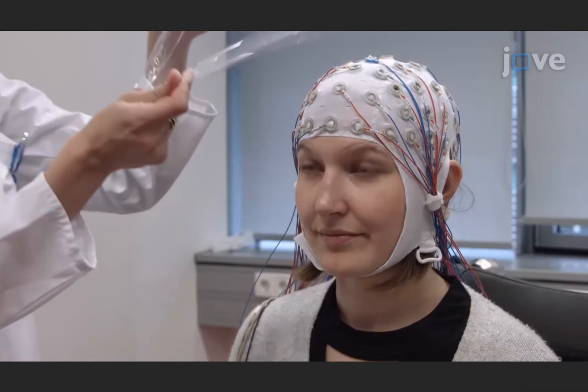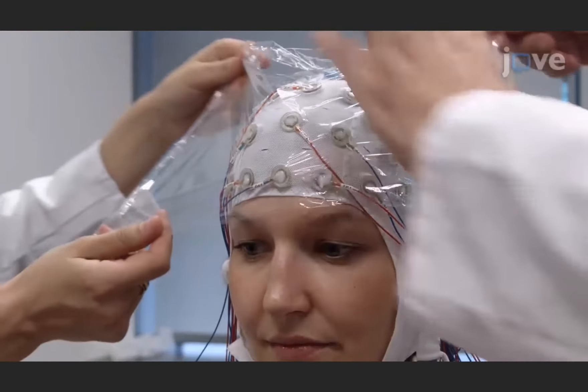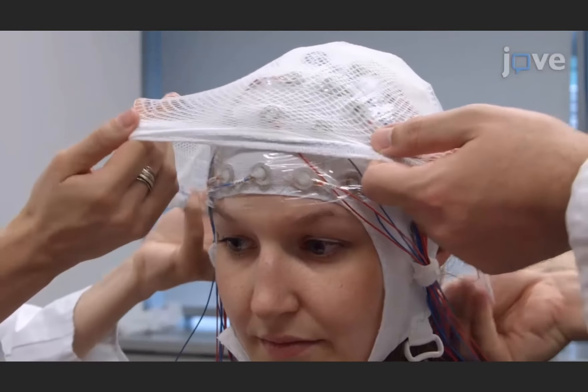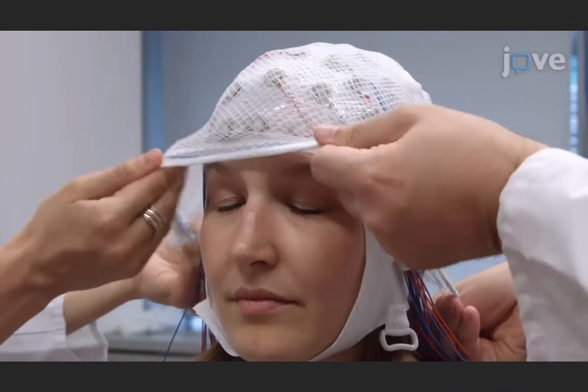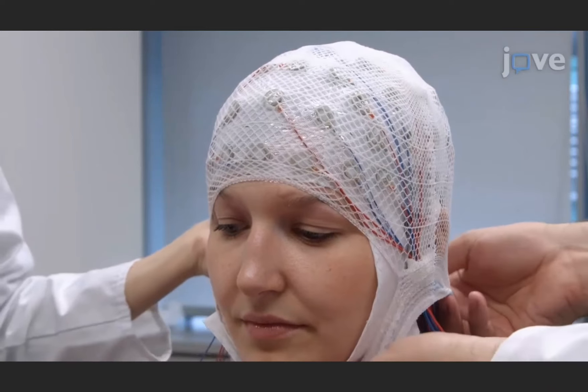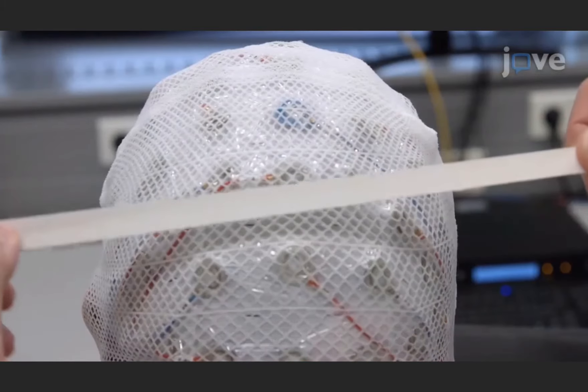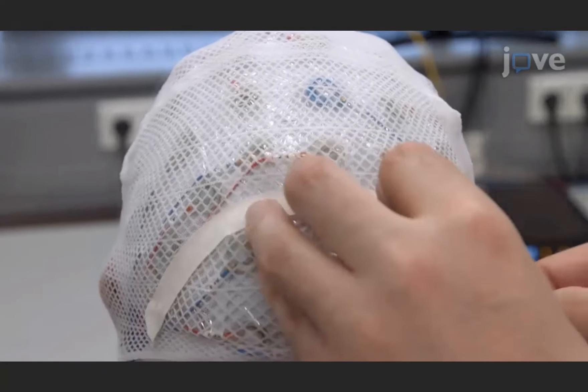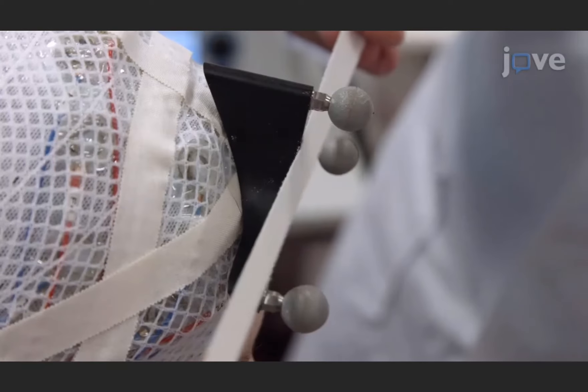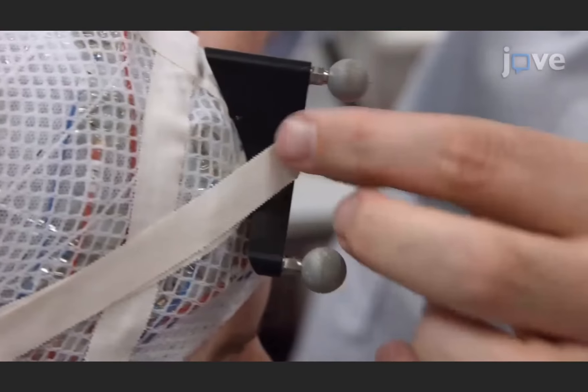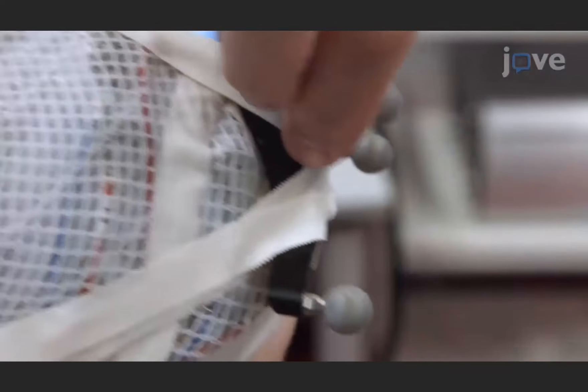Cover the EEG cap with plastic wrap and fit a mesh cap above the plastic wrap to keep the cables in a fixed position to reduce the EEG artifact variability. Then apply adhesive tape to increase the stability of the multiple layers and tape a reflective head tracker to the subject's head to ensure stability throughout the experiment.